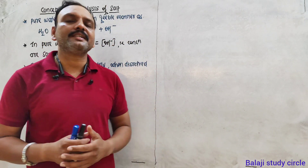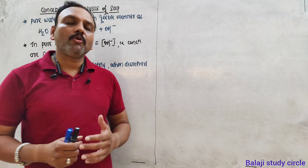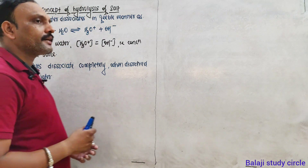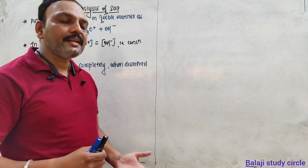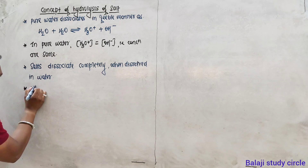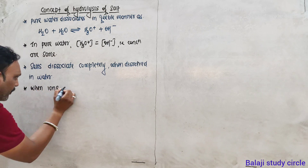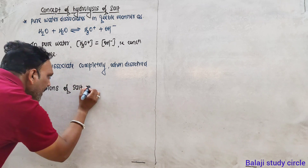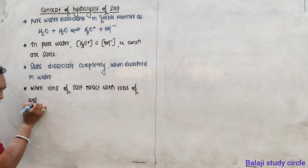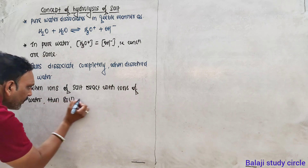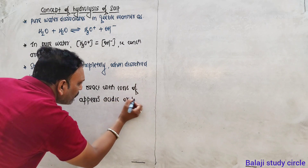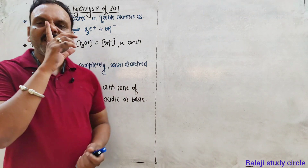Let's say salt ions combine with H+ ions, so H+ ion concentration will be comparatively less. This is why we'll see that the solution becomes acidic or basic. And if OH- ions are consumed, then we'll see the solution is acidic or basic accordingly.